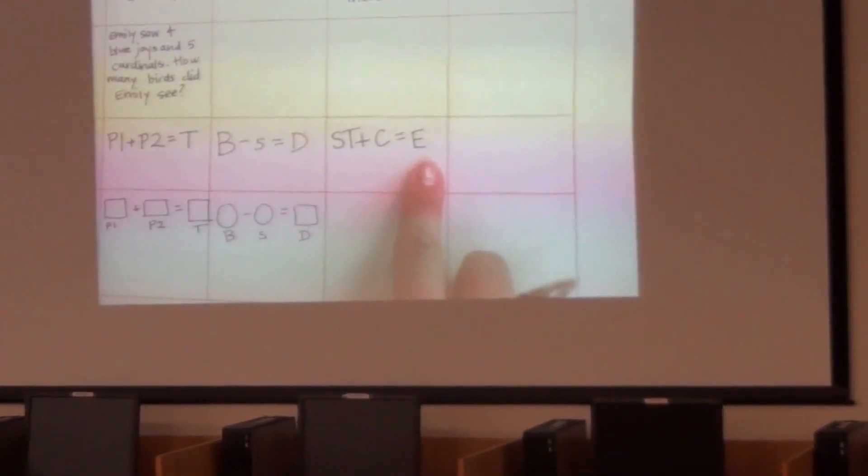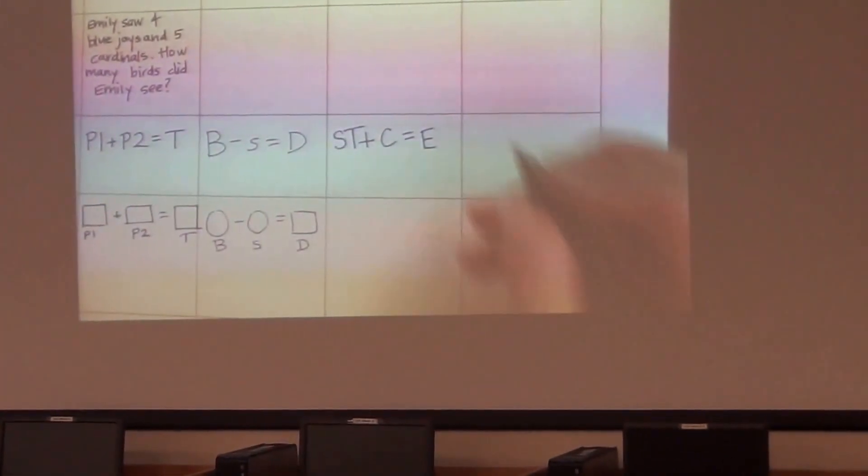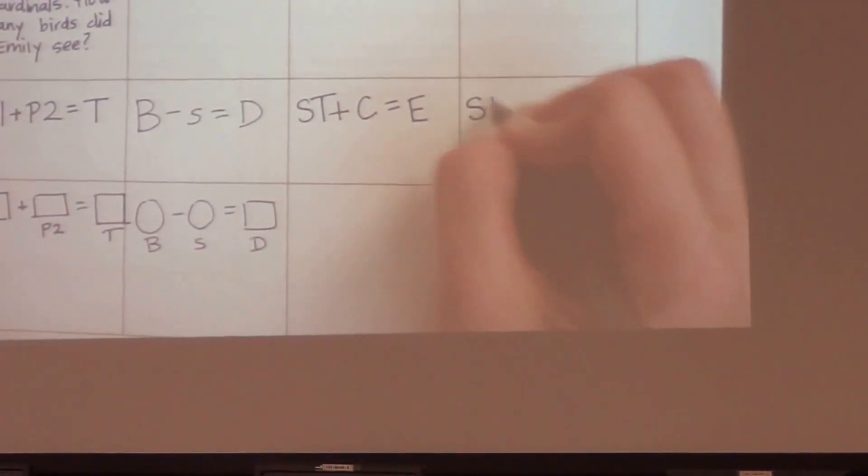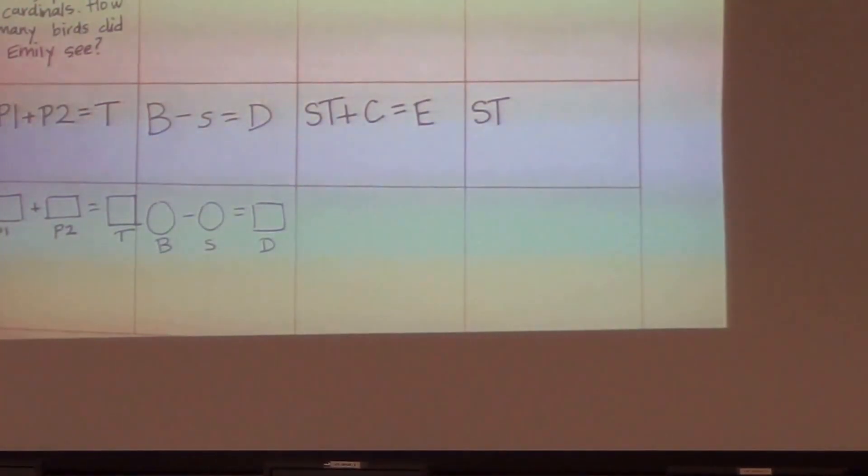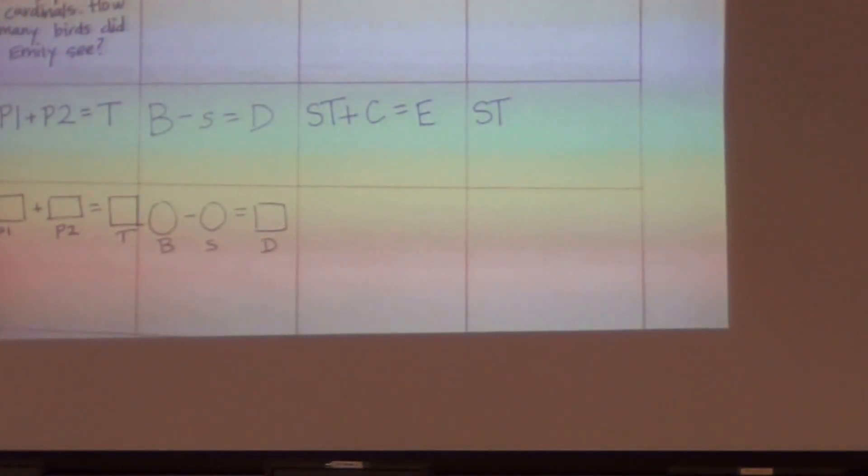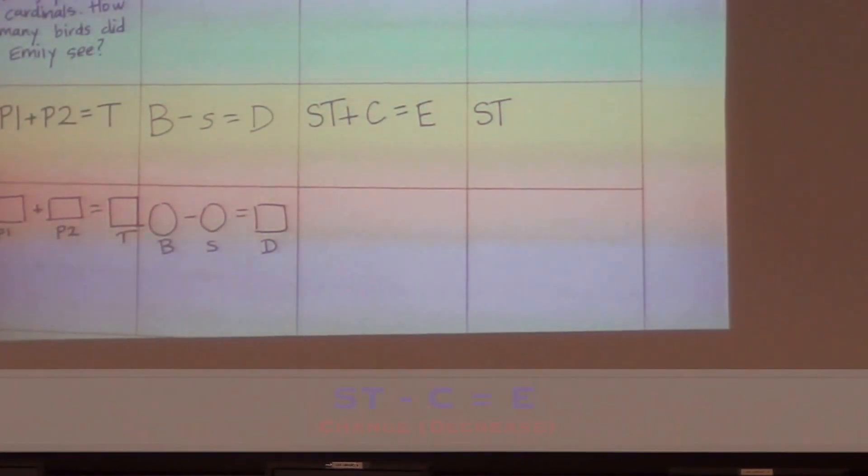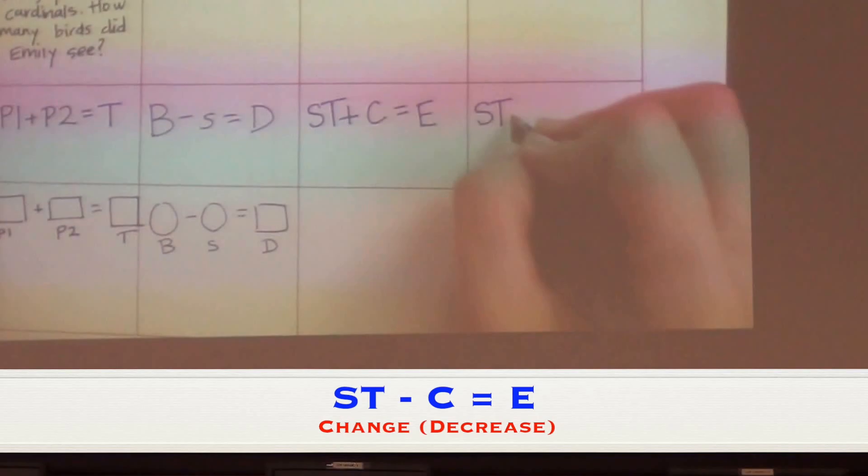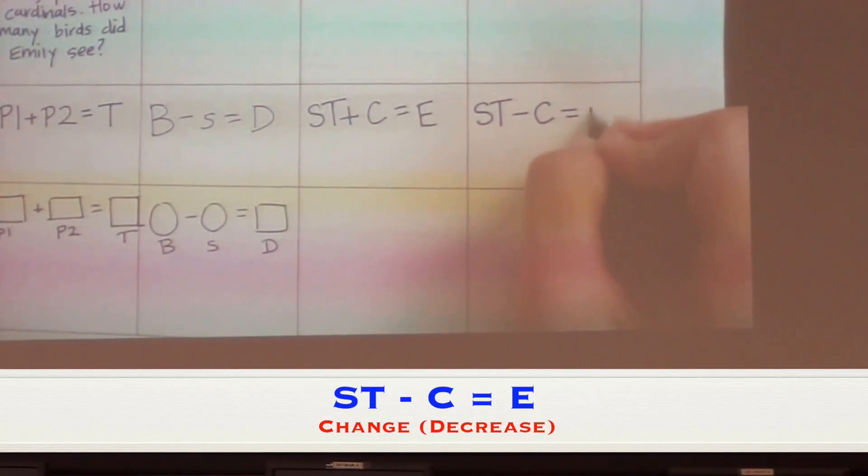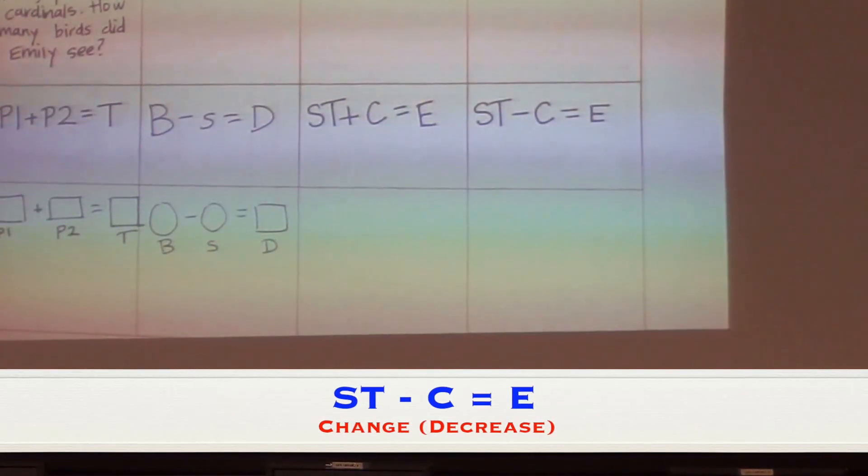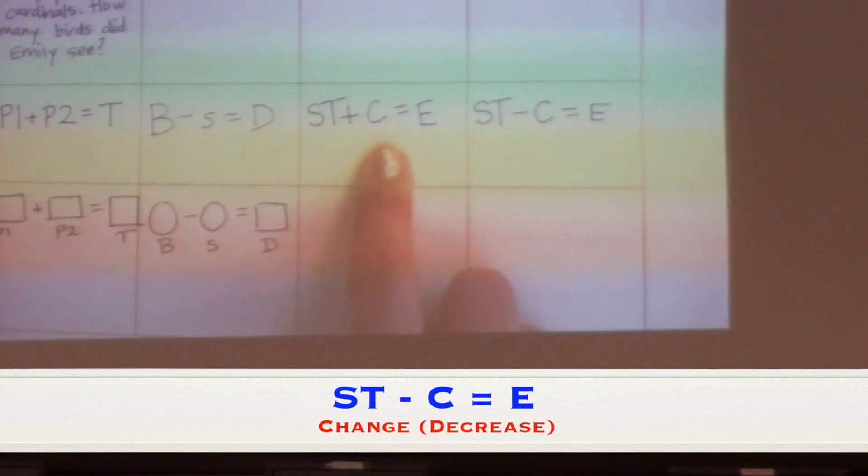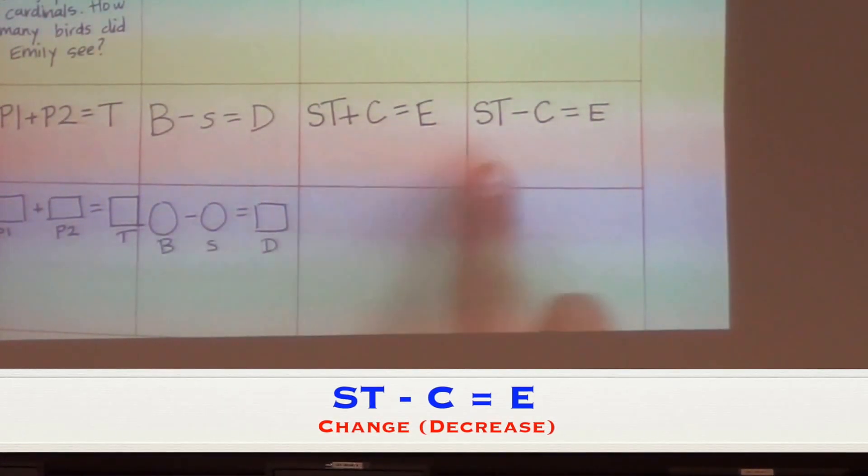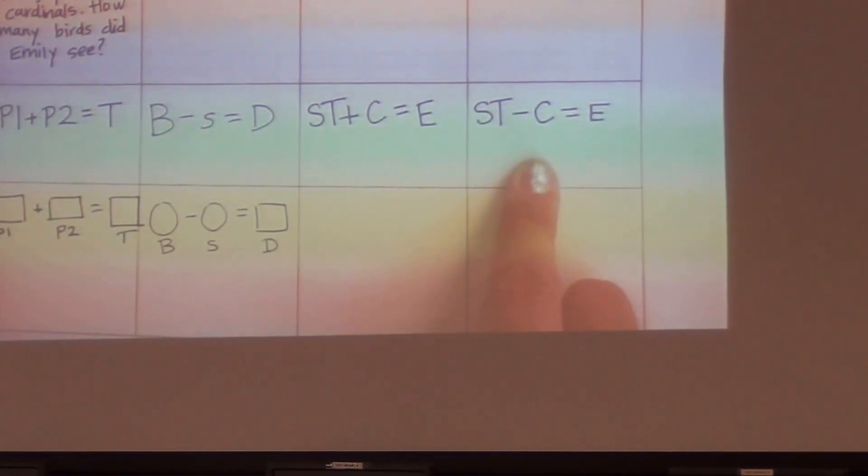Now help me out here. Let's think of a change equation for a change decrease. Start—if it's a decrease, should I use a plus sign or a minus sign? Minus, yeah, because our amount is getting smaller. Very good. So ST minus C equals E. My start plus a change means an increase. Start minus the change equals a decrease.